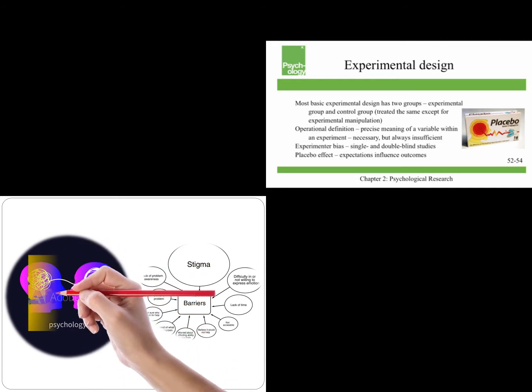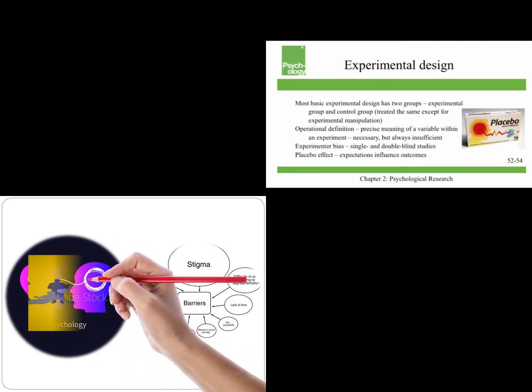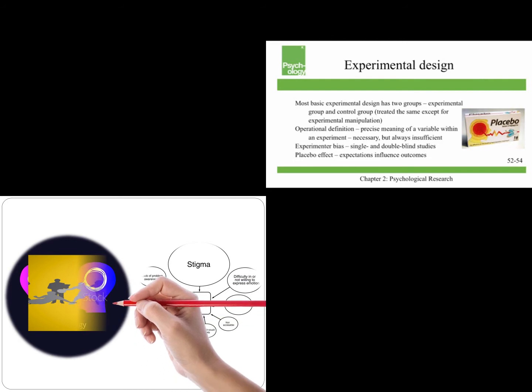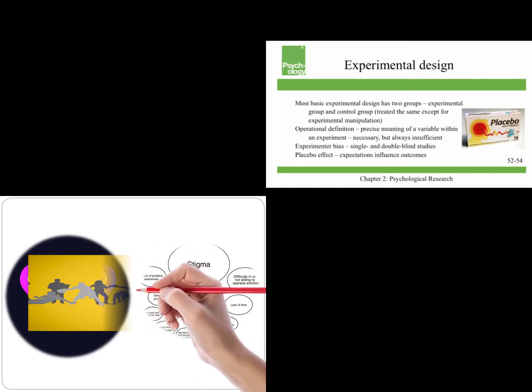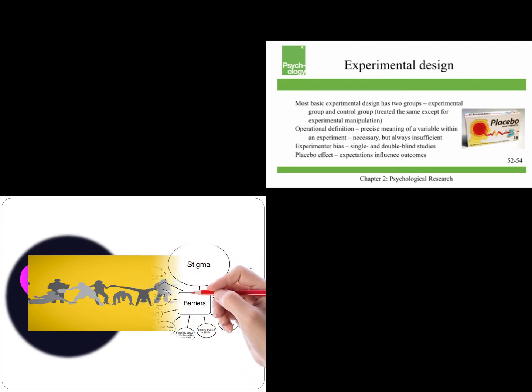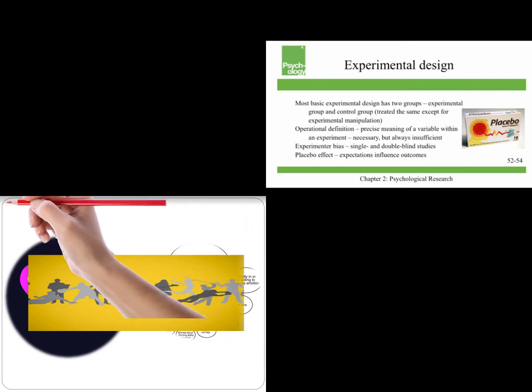In a double-blind study, neither the participants nor the researchers know the group that the participants are in. The placebo effect shows that expectations can influence outcomes. So if you're given a pill and told that it'll make you drowsy, you might actually fall asleep.